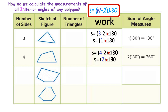Instead of memorizing the measurements of all interior angles for every type of polygon, we need to learn the formula. We can get into not just decagons with 10 sides, but 11, 12, 13, 14 — any number. We can have a 100-sided polygon, and I don't want to memorize all those. Learning this formula makes it much easier.